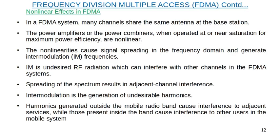In an FDMA system, many channels share the same antenna at the base station. The power amplifiers and power combiners used are non-linear devices, and these non-linearities cause signal spreading in the frequency domain and generate intermodulation frequencies. Intermodulation is undesired RF radiation that can interfere with other channels in the FDMA system. The spreading of the spectrum results in adjacent channel interference, and harmonics generated outside the mobile radio band cause interference to adjacent services while those inside the band cause interference to other users.